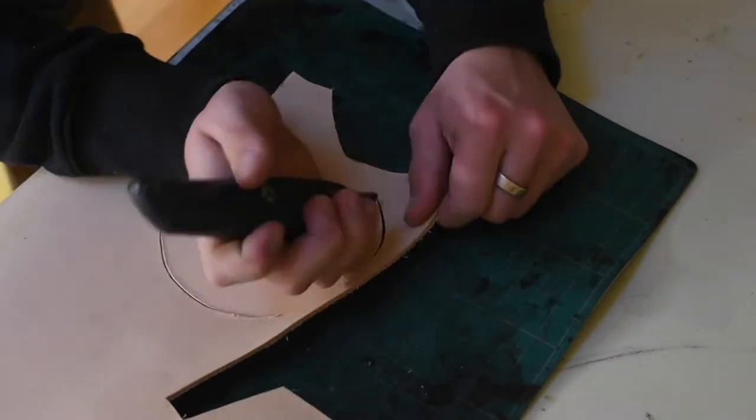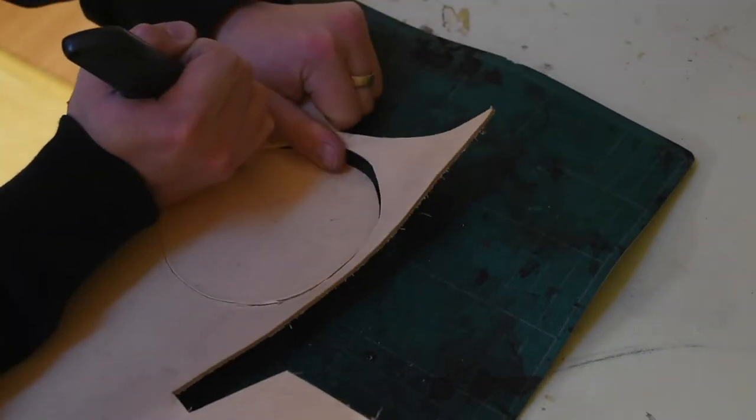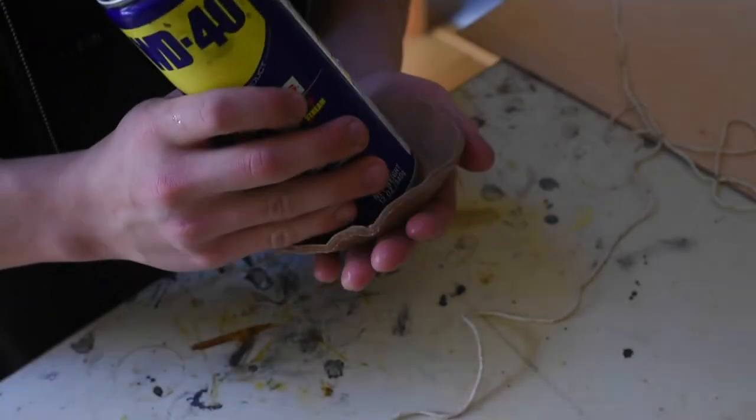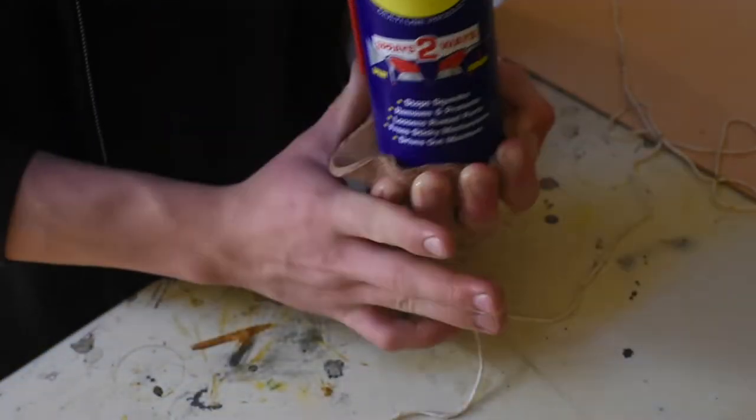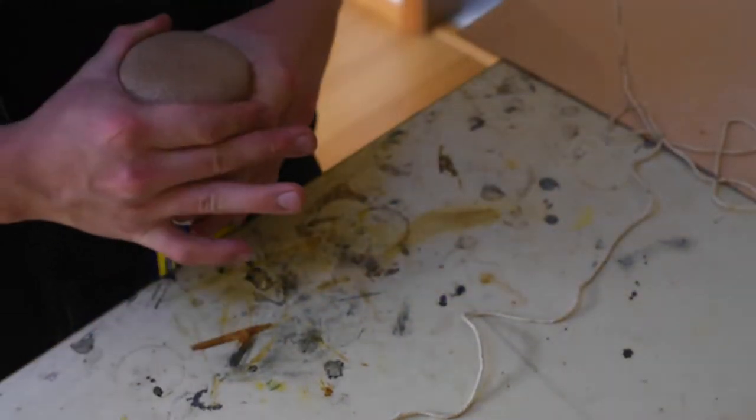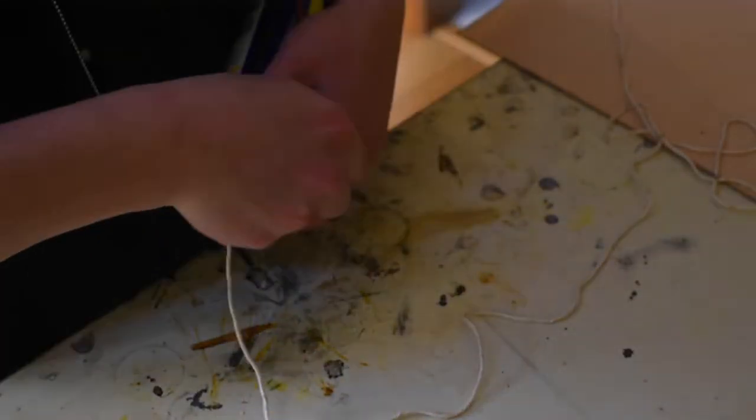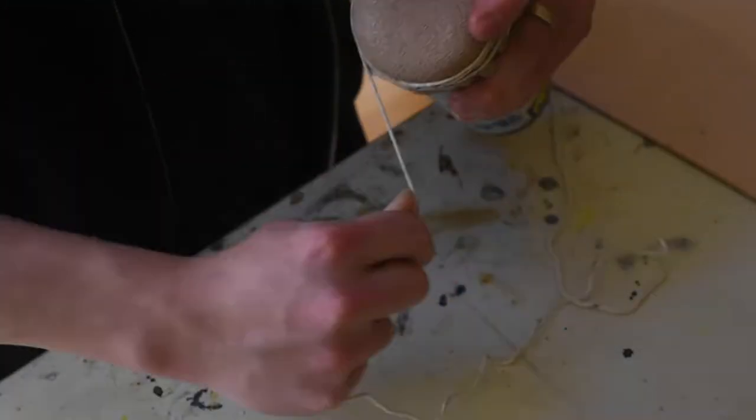The next piece that I cut out is this round piece, which is going to be the bottom of the quiver. Once I've got it cut out, I mold it wet around the base of a WD-40 can, just because I found out that was the exact right size I needed.